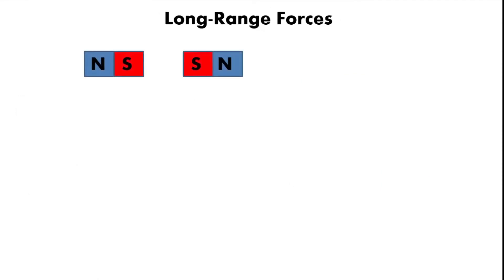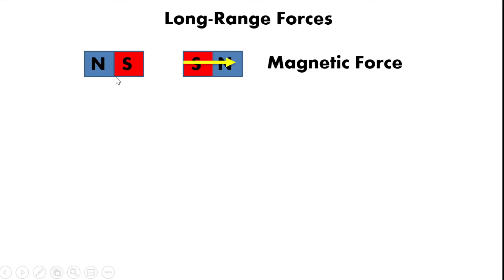The first long-range force is the magnetic force, acted on magnets. One magnet exerts a force on another. Since both magnets shown have south poles facing each other, they tend to repel. There are two types of magnetic interactions: attraction and repulsion. Since they have the same pole — south and south — they repel. Magnet 1 will try to push magnet 2 away, so the direction of the force is away from magnet 1.